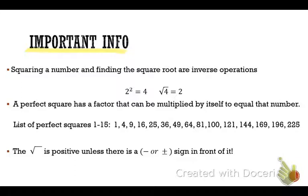Squaring a number and finding the square root of a number — those are opposite operations. So if I square something and then turn around and take the square root, those operations undo each other. That's what we see here: 2 squared equals 4, and the square root of 4 equals 2.